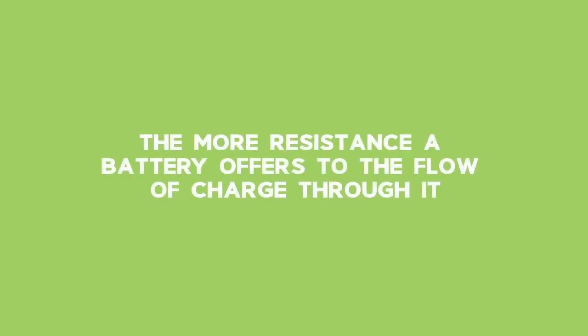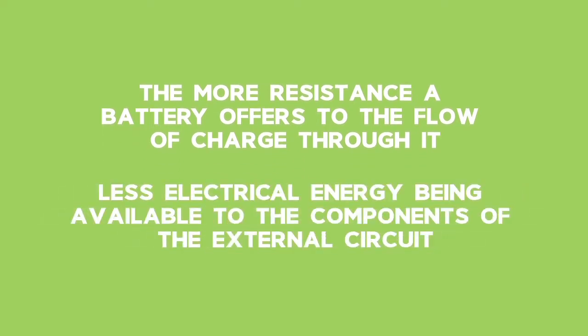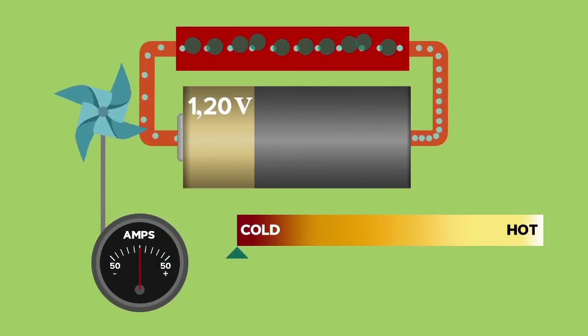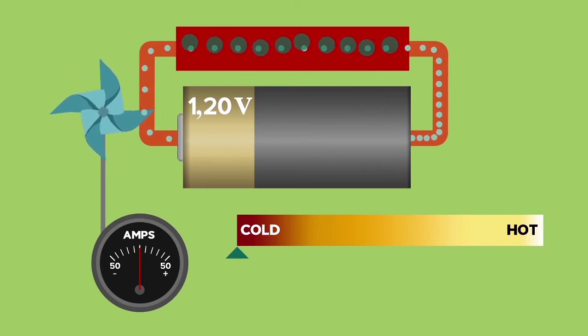The more resistance a battery offers to the flow of charge through it, this results in less electrical energy being available to the components of the external circuit. Remember that voltage is shared between series resistors, so the internal resistance takes some of the total EMF available.